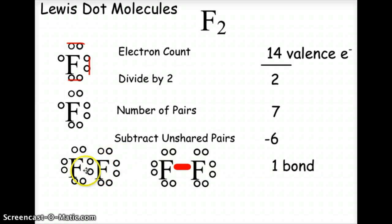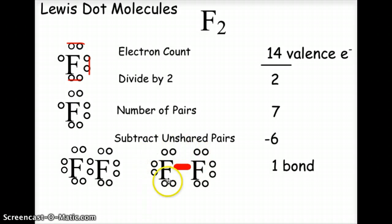When the fluorine atoms move close enough together, they share those two electrons in the middle, and this line represents those two electrons being shared. This is the Lewis dot structure for F2, diatomic fluorine.